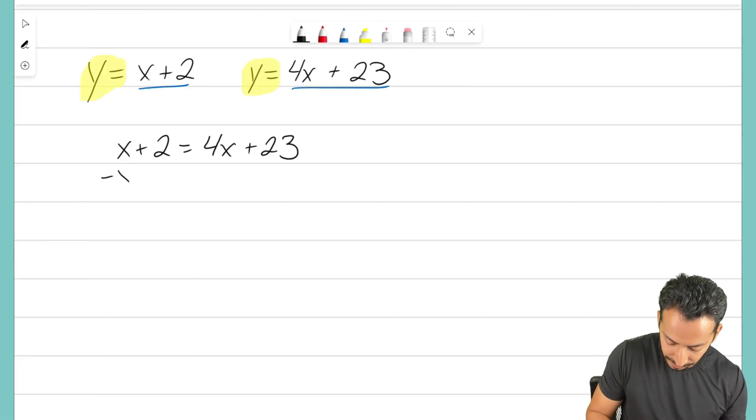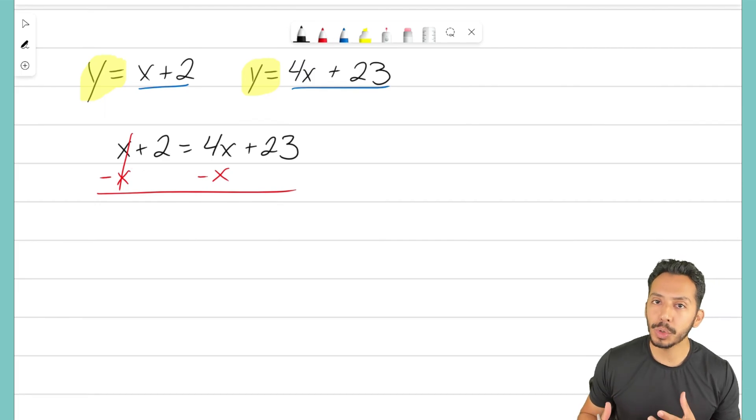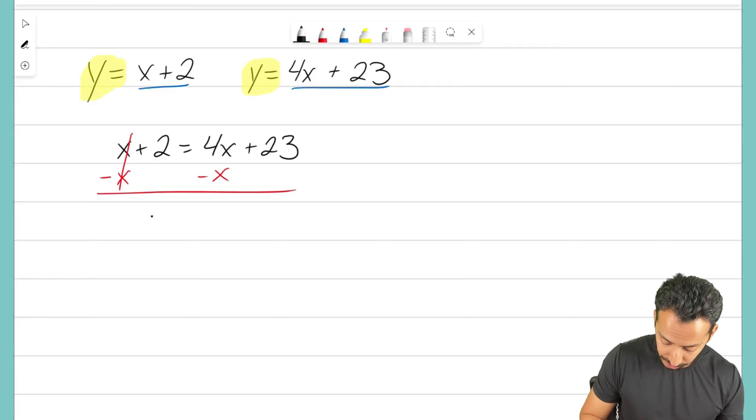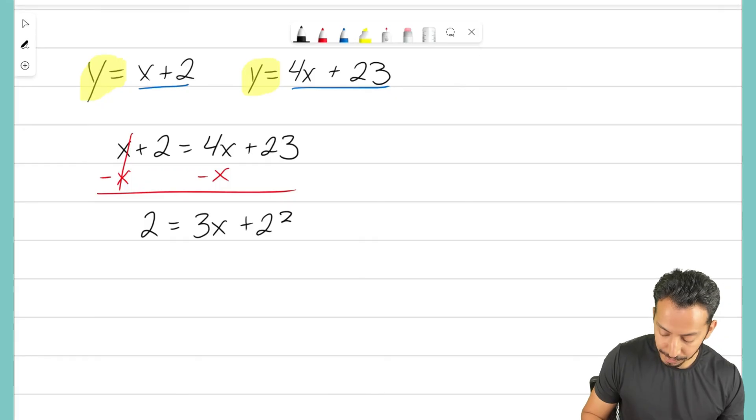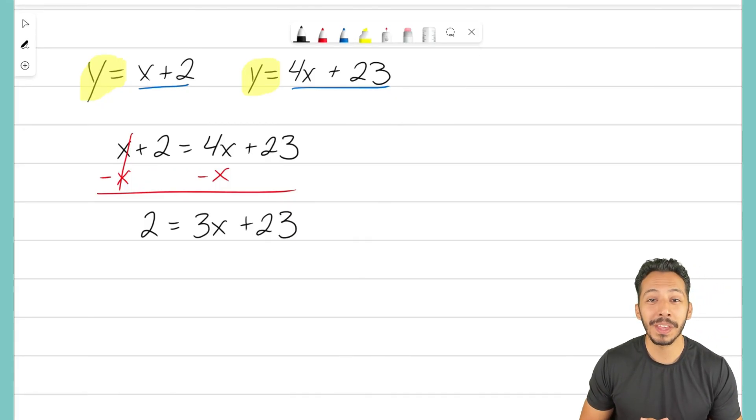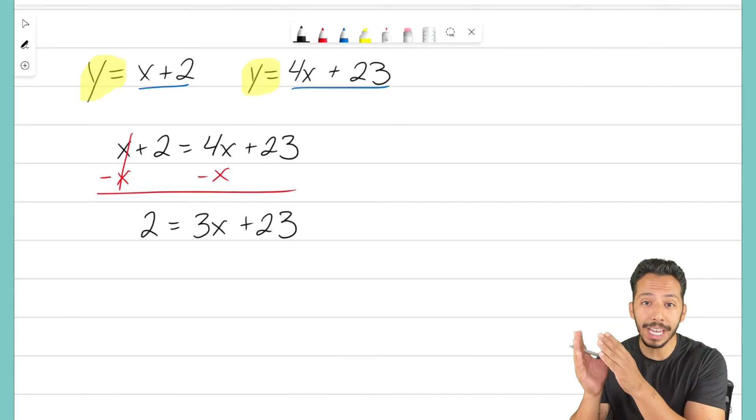I'm going to subtract this x on the left side. I'm going to move that x variable over from the left side to the right side, just to keep my x term positive. What happens is those x's on the left are going to zero out. I'm still left with positive 2, equaling, well, 4x's take away 1x will leave us with 3x's, and I still have my plus 23 at the end.